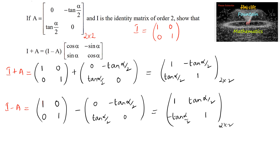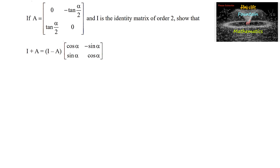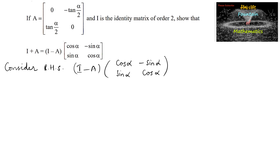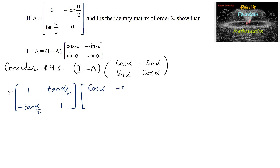Let us consider the right-hand side: I minus A into [cos α, -sin α; sin α, cos α]. So we have I minus A as [1, tan(α/2); -tan(α/2), 1] multiplied into [cos α, -sin α; sin α, cos α].